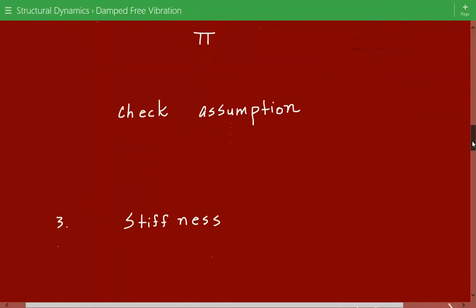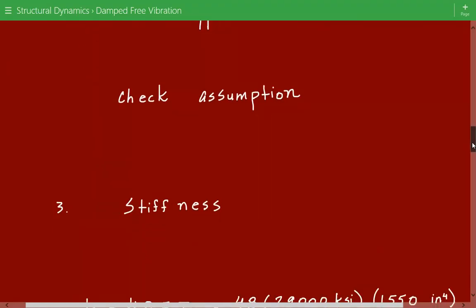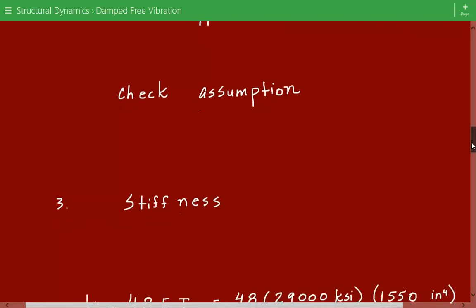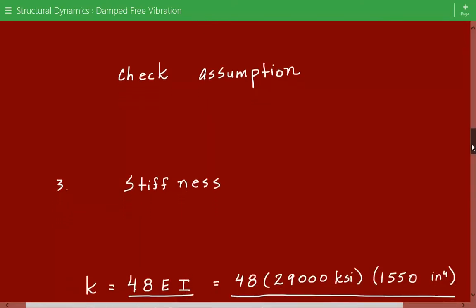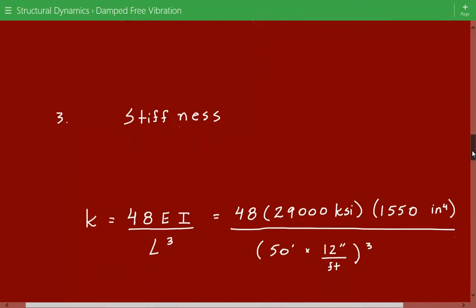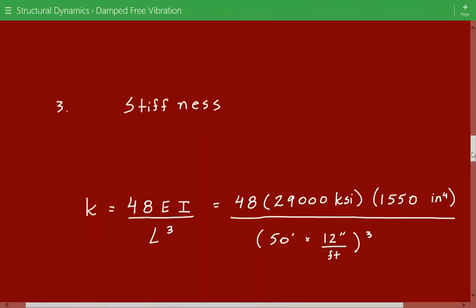Next, now that we've calculated the structural damping coefficient, we can move on to calculating the equivalent viscous damping coefficient. But to do that, we need to first calculate the stiffness. And for a simply supported beam with the load at the midspan, the stiffness will be equal to 48 times Young's modulus times moment of inertia of the beam divided by the length cubed.